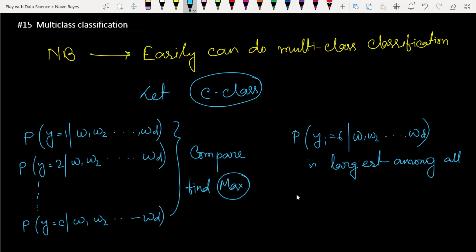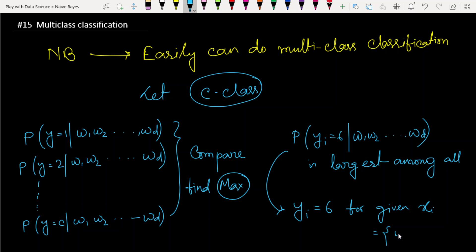We can easily conclude that our predicted y_i will be 6 for the given x_i, where x_i is w1, w2 through wd. This is how Naive Bayes inherently and easily performs multi-class classification.